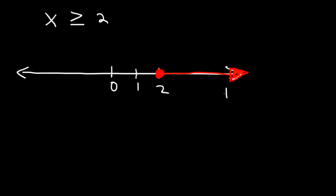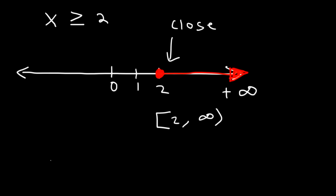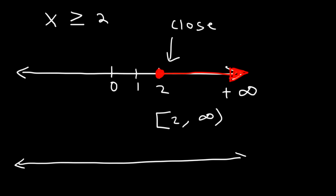That is, towards positive infinity. So to represent the answer using interval notation, we need to use a bracket every time there's a closed circle. So it's going to be from 2 to infinity. You can also graph it by putting the bracket at 2 on the number line and a parenthesis near infinity.